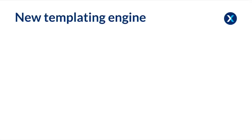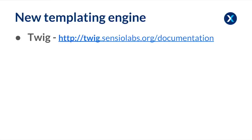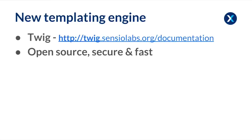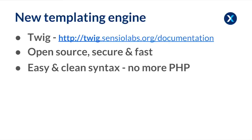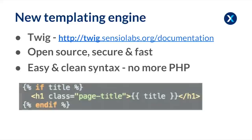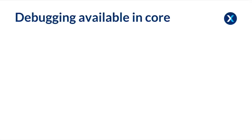There's a new templating engine that replaces the current PHP template, and that is Twig, which as Angie mentioned in the keynote is created by the same people who created Symfony — the PHP framework that Drupal 8 is adopting. The template is open source, relatively secure compared to what we have now, which basically allows you to put anything into your templates including SQL queries. It's relatively fast and easy to learn with very clean syntax, so you don't have to learn PHP anymore. Here's an example of a title being printed — it checks if the title is found and if it is then prints out that variable.